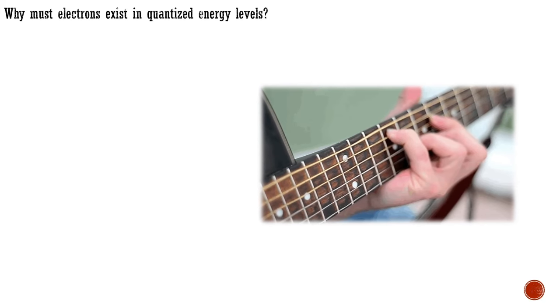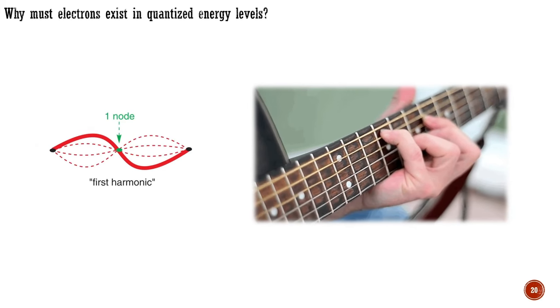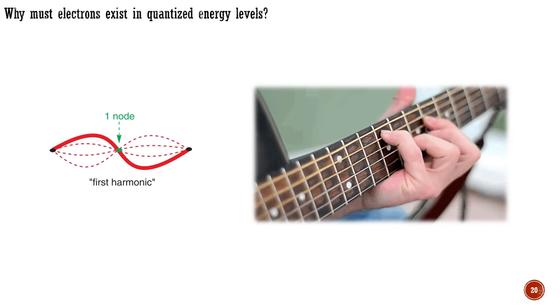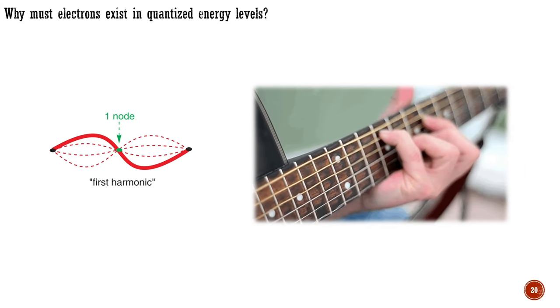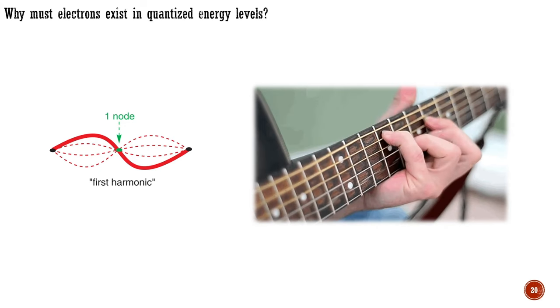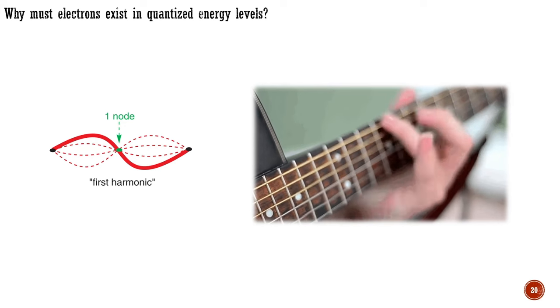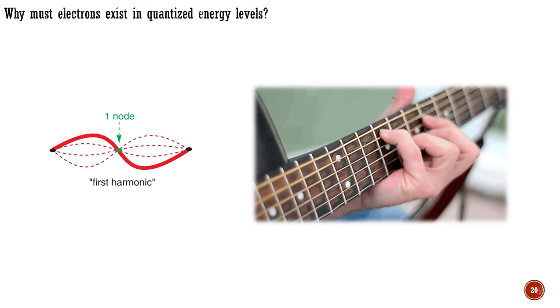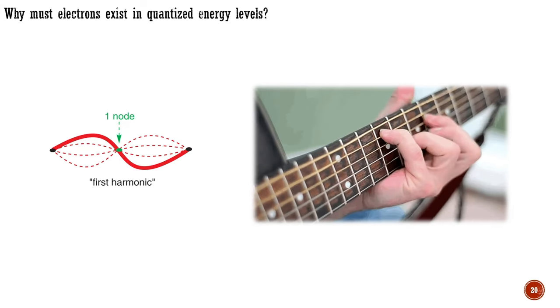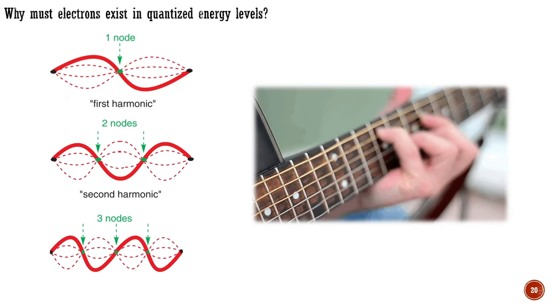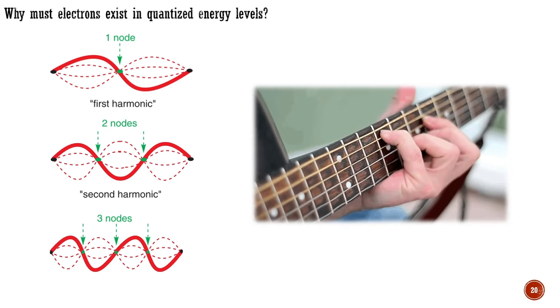This is not the only way the string can vibrate. Another possibility, shown on the left, has the ends of the string and a point in the middle, known as a node. The wavelength of this vibration is half that of the previous one, doubling the frequency. Musically, this vibration sounds an octave higher and is called the first harmonic. The third and fourth possibilities for allowed vibrations are shown below, corresponding to further harmonics.